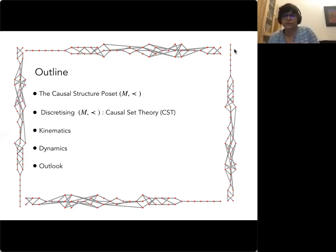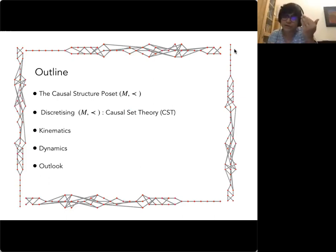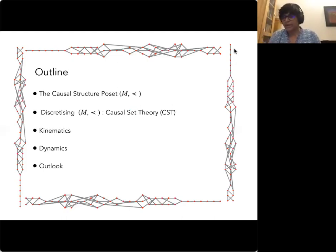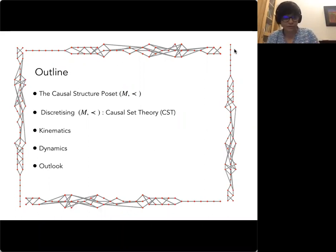It's fairly natural in this theory to divide the discussion into kinematics and dynamics. The kinematics involves what we call geometric reconstruction, which is very interesting from the point of view of Lorentzian geometry. Then I'll talk about dynamics — we don't have a full quantum theory of causal sets, so these are tentative approaches, but we've pursued some ideas fairly rigorously and have results.